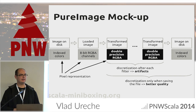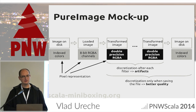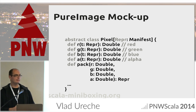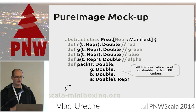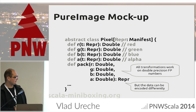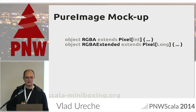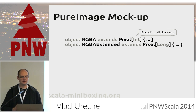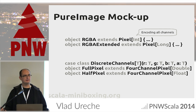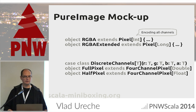In the library, we generalize over the pixel representation. The Pixel type class takes a representation and can give us red, green, blue, and alpha as doubles — so all transformations work on doubles, while everything can be encoded differently. Encodings include RGBA all packed in an integer, RGBA extended with 16 bits per channel as a long, or discrete channels each as a long, float, or double for more precision.